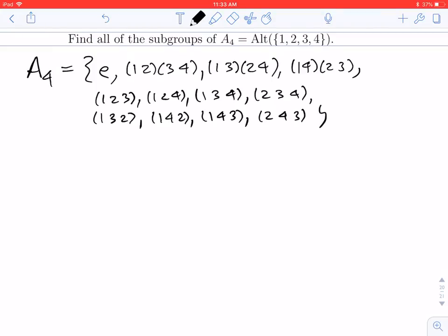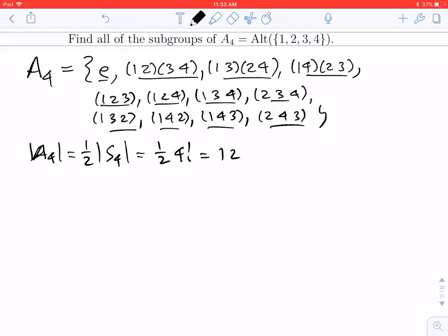All right, in total I now have 12 elements. And since we knew that the order of A4 was equal to half the order of S4, which is half of 4 factorial, which is half of 24, which is 12, I know I have all the elements of A4.